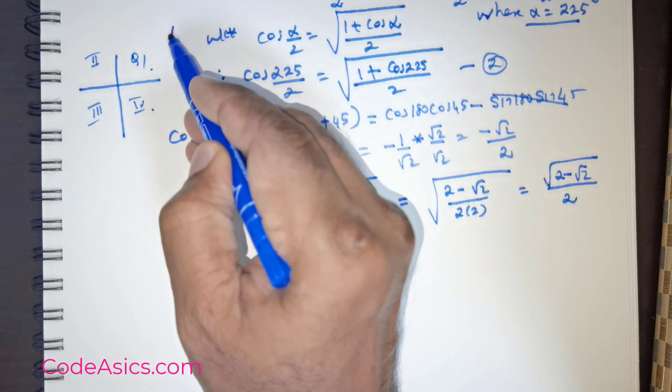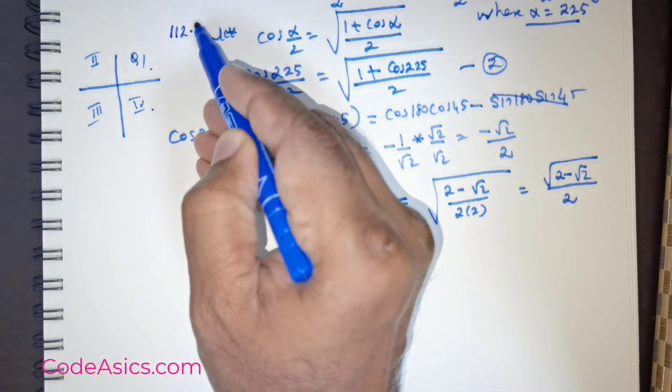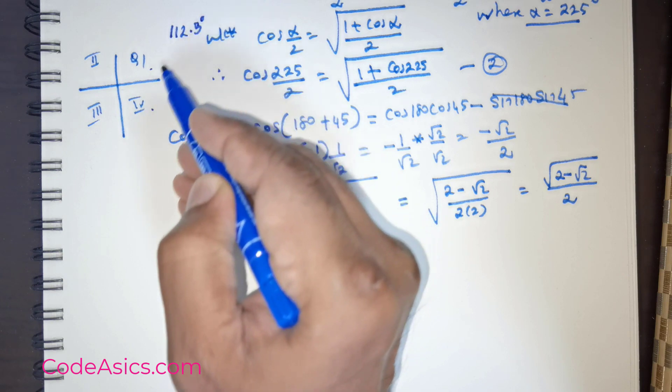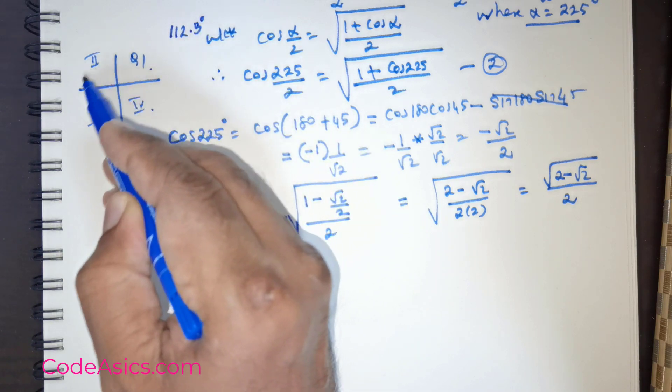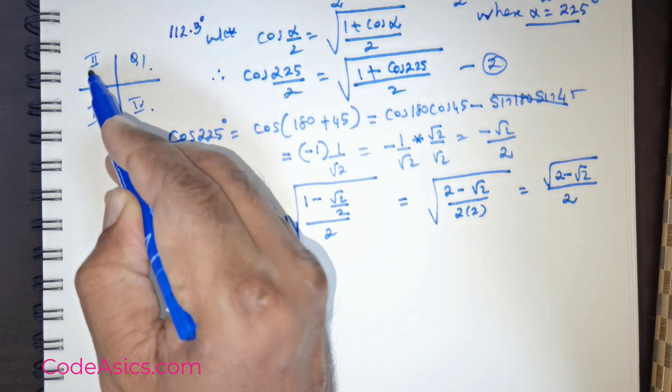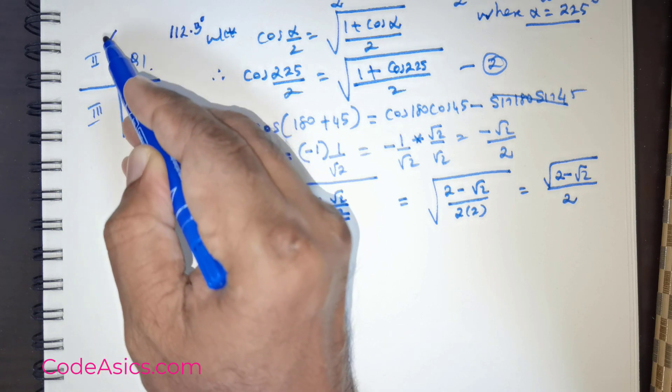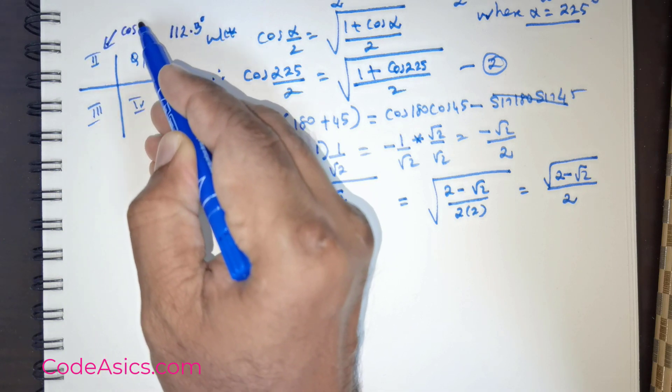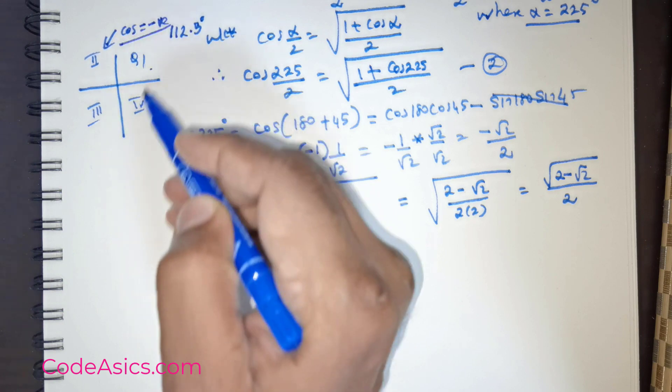Apparently, the value 112.5 degrees is present in quadrant 2, where sine alone is positive. In this quadrant, the cosine value is negative, right?